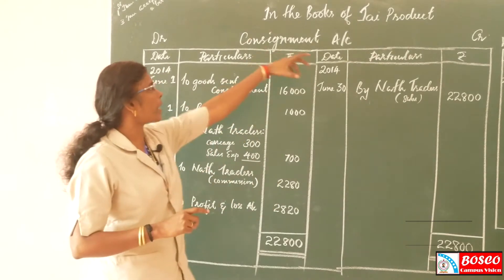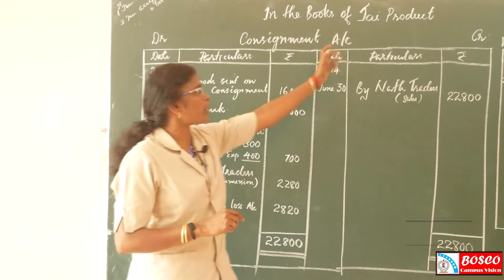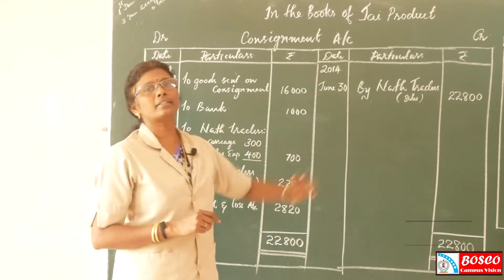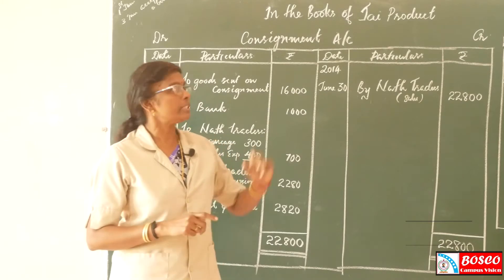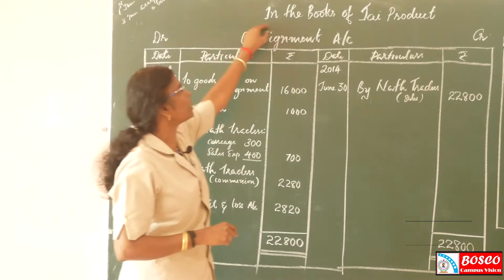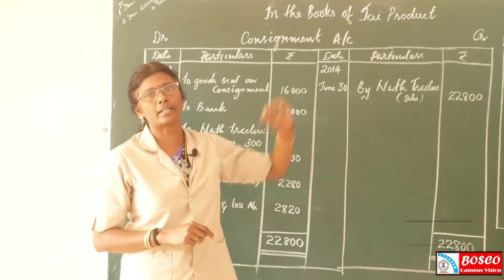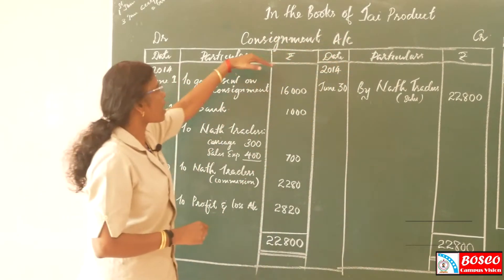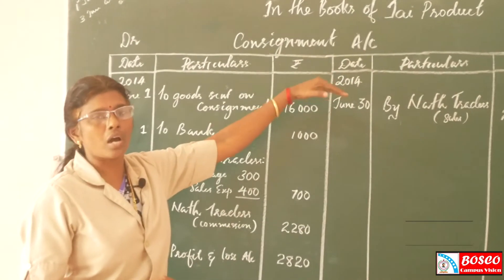J. Products sends goods to North Traders. J. Products is the consignor, and North Traders are the consignee. Now we prepare, in the books of J. Products, the first account: the consignment account.